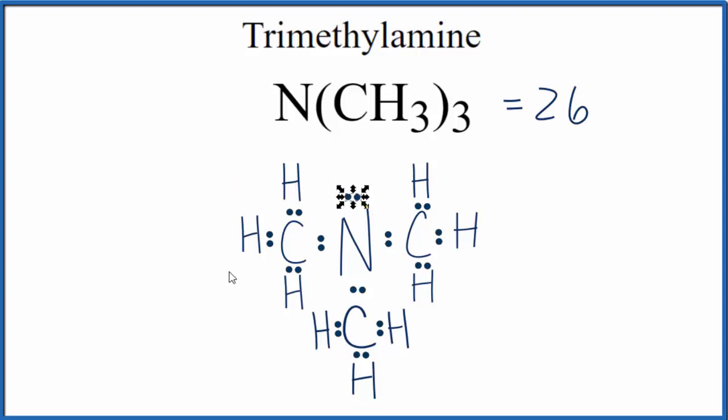So now everything has an octet, all the carbons and nitrogens, so their octets are full, and then hydrogen, that only needs two valence electrons to have a full outer shell.